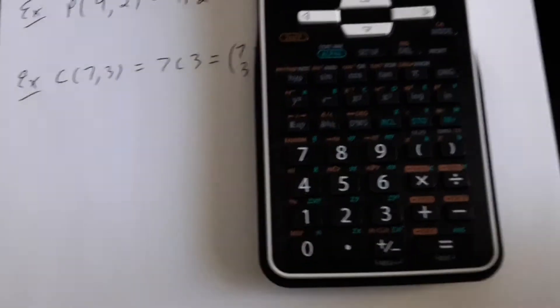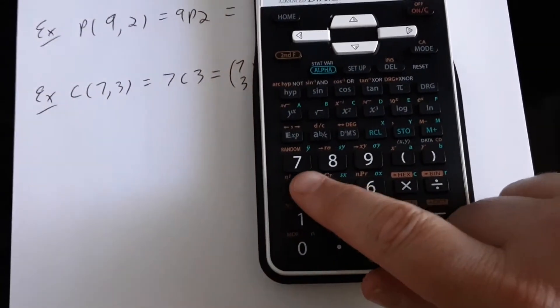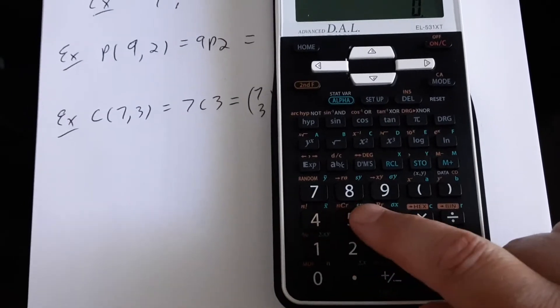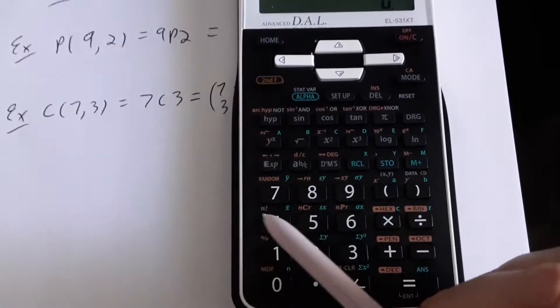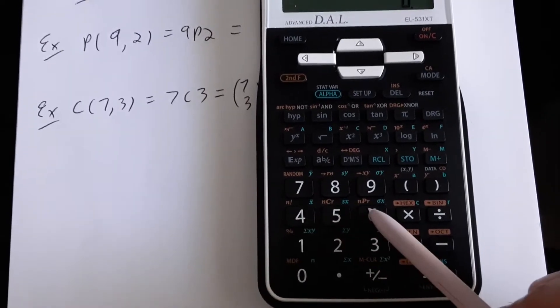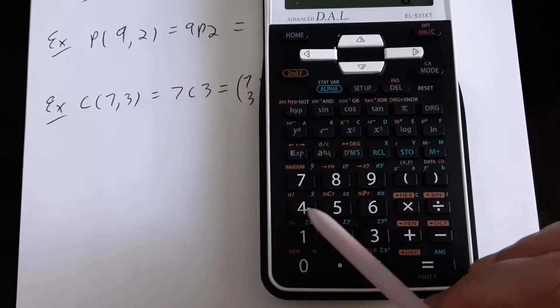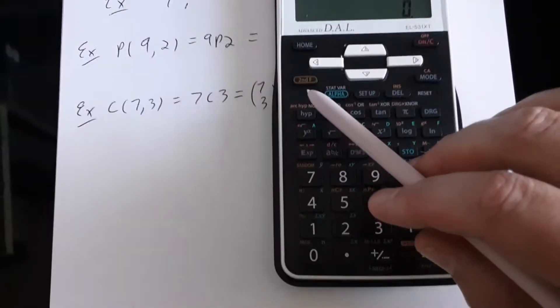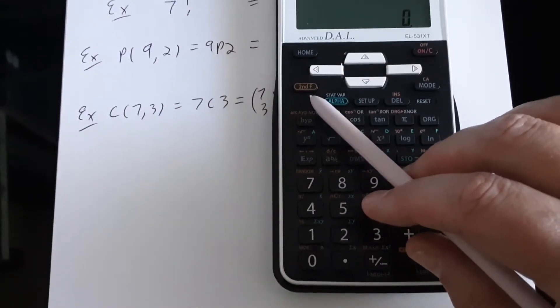All of the functions that we'll be using here you can see on the calculator above the numbers 4, 5, and 6. You can see the factorial function, the combination function, and the permutation function. All three of these functions we get at by using the second function button on our calculator.